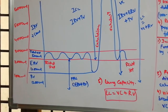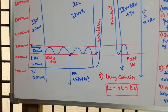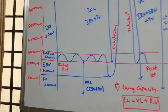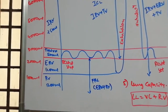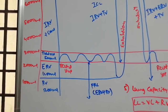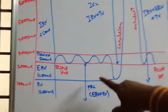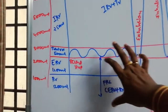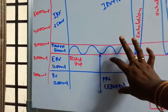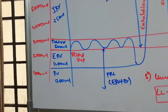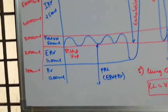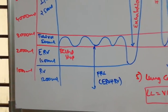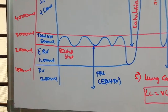Expiratory Capacity (EC) is the expiration reserve volume. Functional Residual Capacity (FRC) is the volume remaining after normal exhalation, and it includes the ERV plus the residual volume. FRC is equal to ERV plus RV.